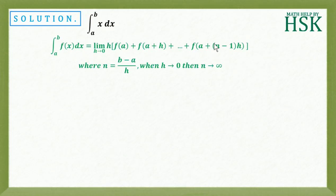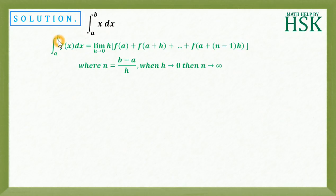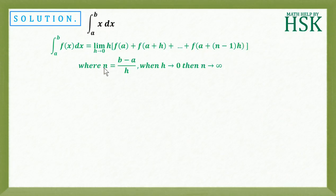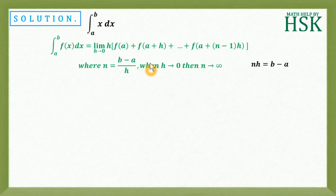We are going to apply this formula to solve the value of this given integral. This is known as evaluation of the definite integral as the limit of sum. This formula states that if we have any function from the limits a to b, then its value is equal to the limit of h tending to 0 of h times f(a) + f(a+h) + ... + f(a + (n-1)h), where nh = b - a, and when h tends to 0, n tends to infinity.